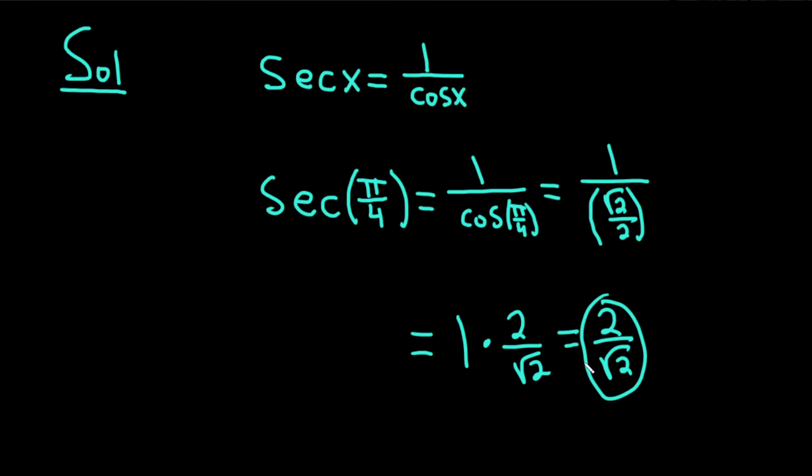You could leave your answer like this, or you could rationalize. To rationalize means that you want to eliminate the square root in the denominator. So you multiply by the square root of 2 over the square root of 2, which is the same thing as 1.